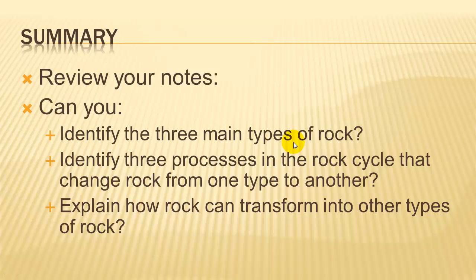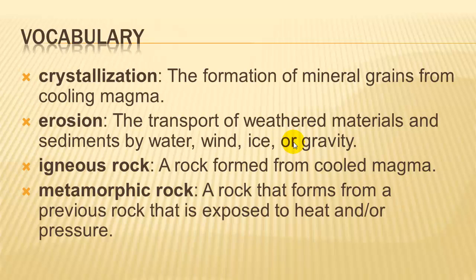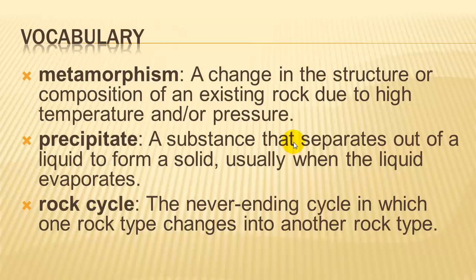In summary, review your notes to make sure that you can identify the three main types of rock, the processes in the rock cycle that change rock from one type to another, and be able to explain how rock can transform into other types of rock. There was a lot of vocabulary in this video, but you don't have to rewrite vocabulary words if you already have the definitions in your notes — just review and make sure they're there. If they're not, go back and add them.